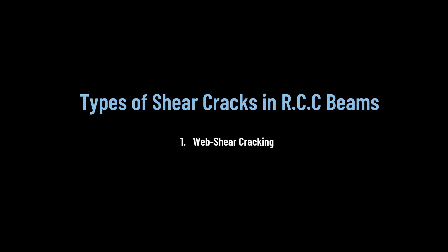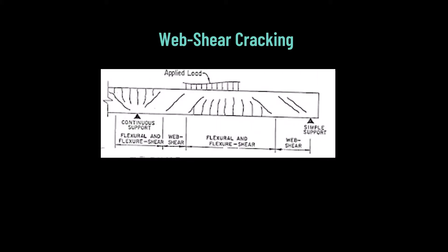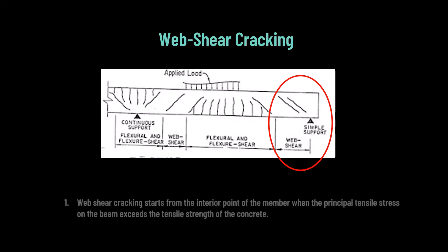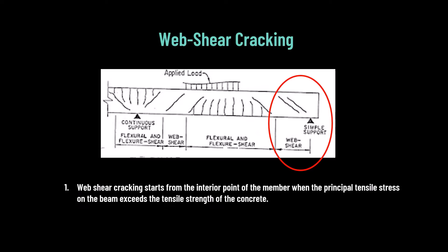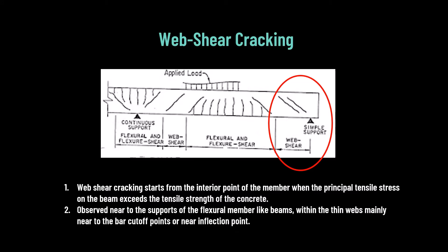Shear is observed in RCC beams either through web shear cracking or flexural shear cracking. Web shear cracking, as shown in the figure, starts from the interior point of the member when the principal tensile stress on the beam exceeds the tensile strength of the concrete. It is observed near the supports, within thin webs, mainly near bar cut-off points or inflection points, and is especially evident when the beam is subjected to axial tension.